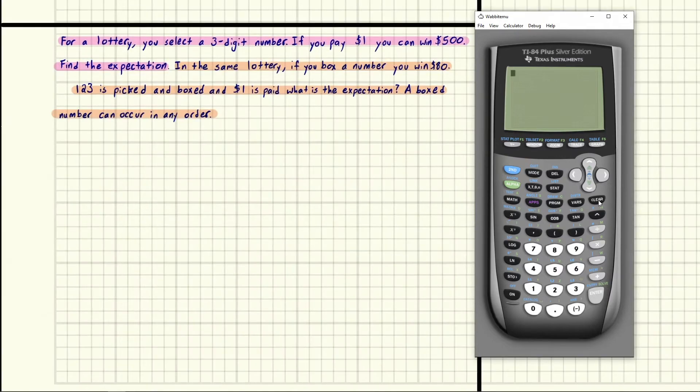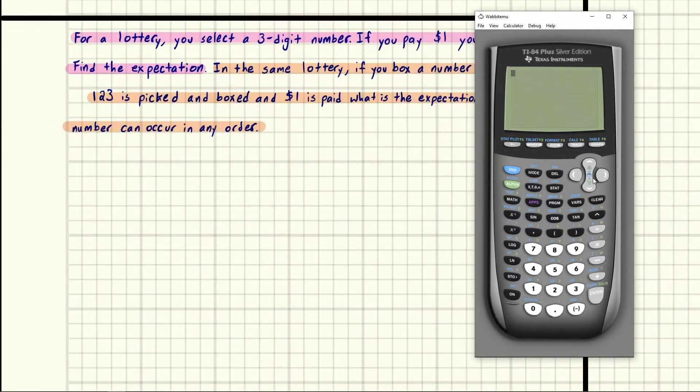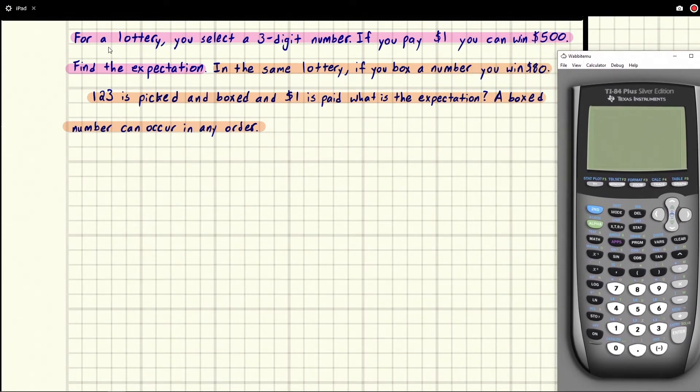So let's go ahead and dive into exactly how do we do this. So for this part, all we need to do is say, okay, we've got a three digit number, and we're paying money to win this thing. If we win, we still paid a dollar to play. So we don't really win $500, we win $499.